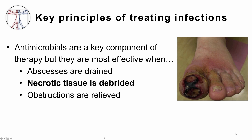Secondly, necrotic tissue must be debrided. Much like with an abscess, one of the reasons that you need to do things other than giving antibiotics is because antibiotics cannot get to the bacteria in the center of an abscess — they just can't penetrate and cannot be effective at killing bacteria. A similar phenomenon happens in patients who have dead or necrotic tissue. That necrotic tissue does not have any blood supply, and if bacteria or other organisms are living in dead tissue with no blood supply, there are no antibiotics that are going to get there via the blood supply. Therefore, you need to debride or eliminate that tissue because it's not going to be cured with antibiotics alone.